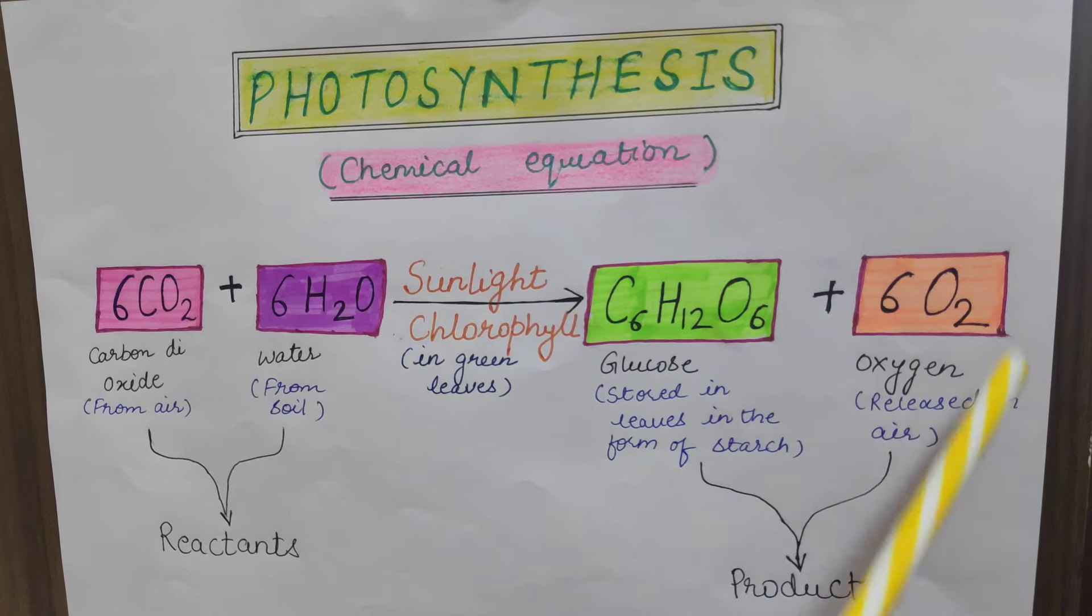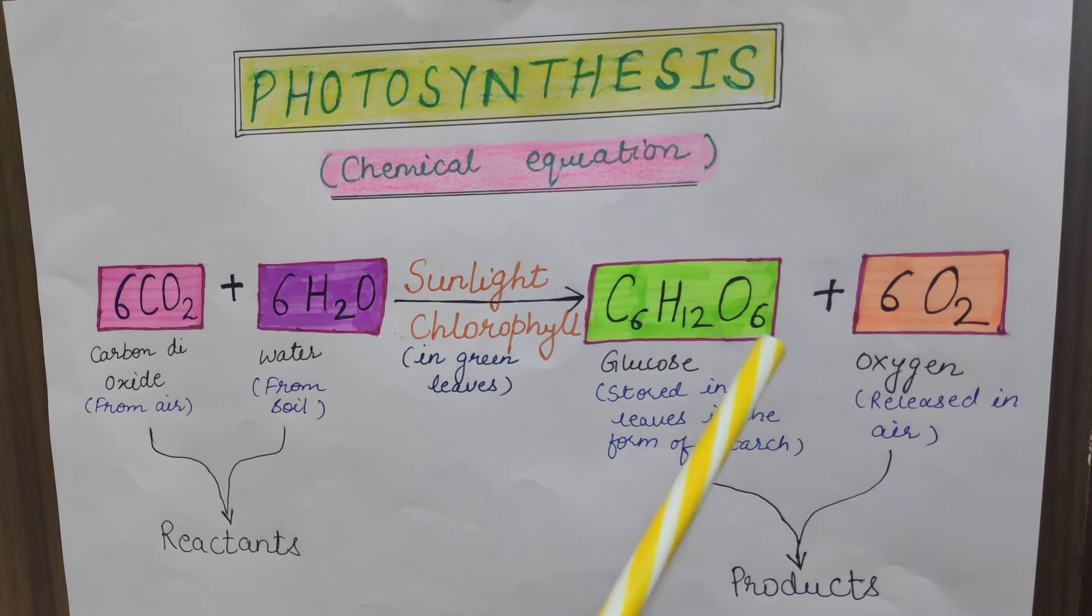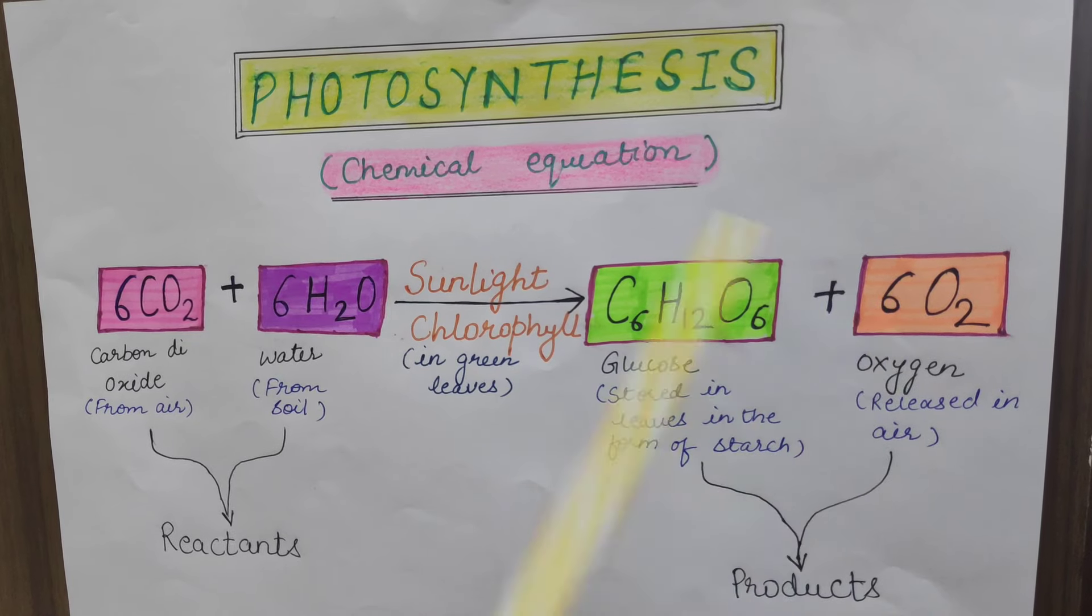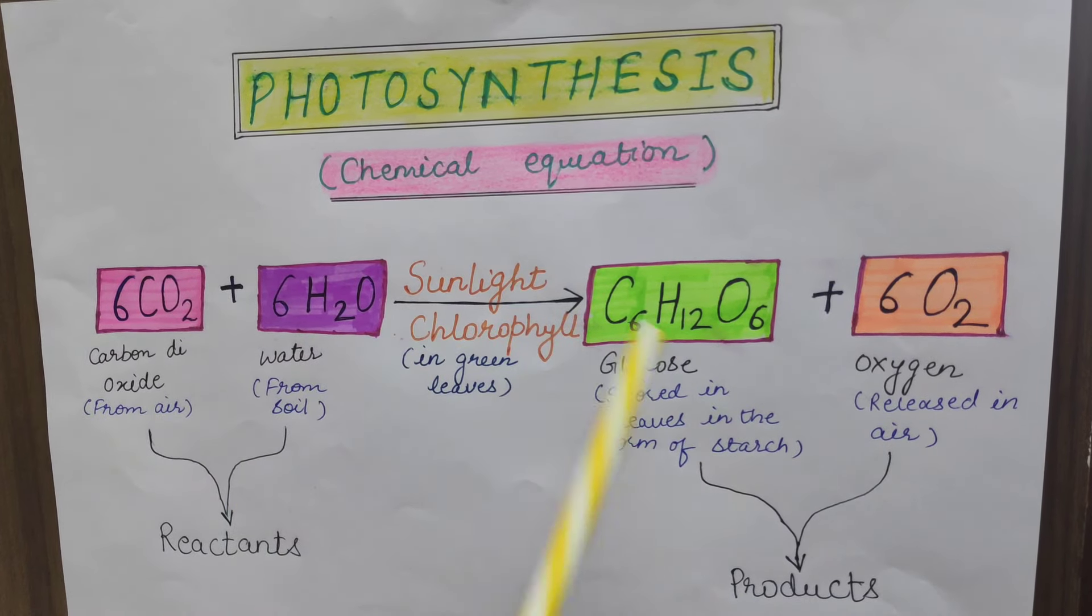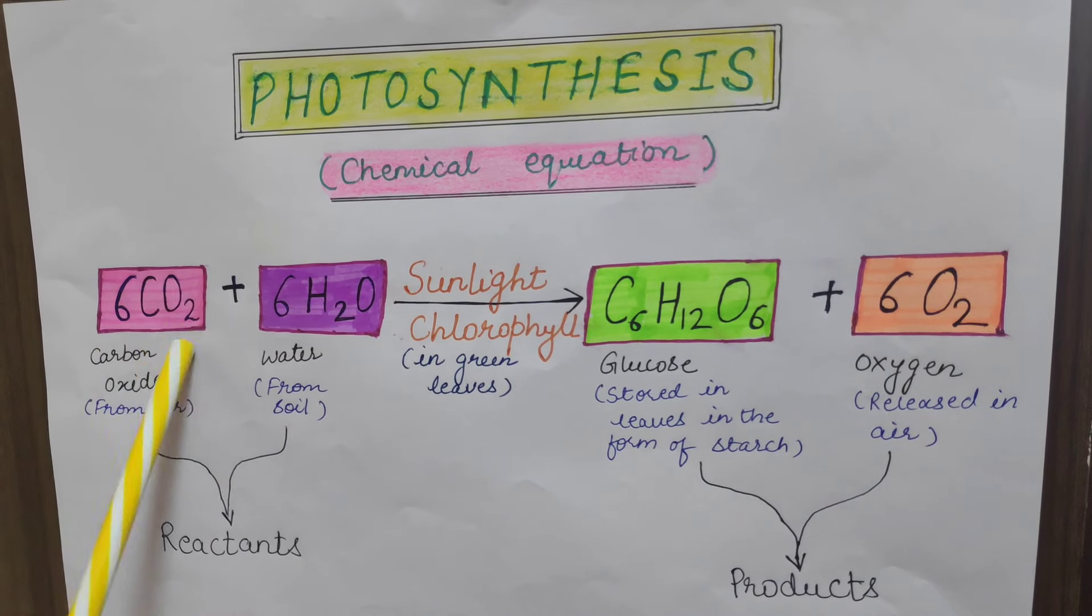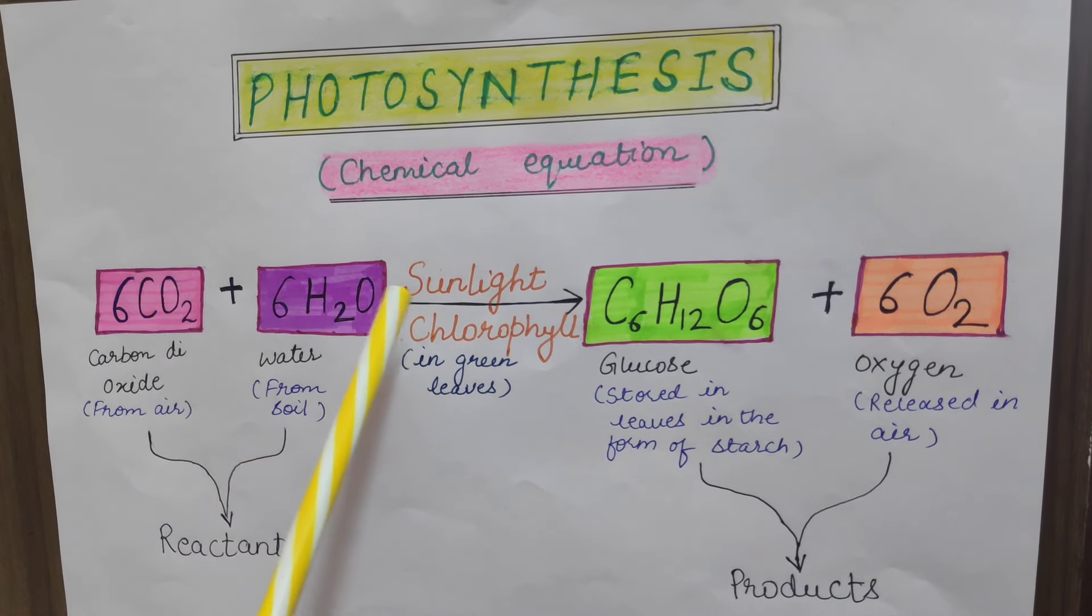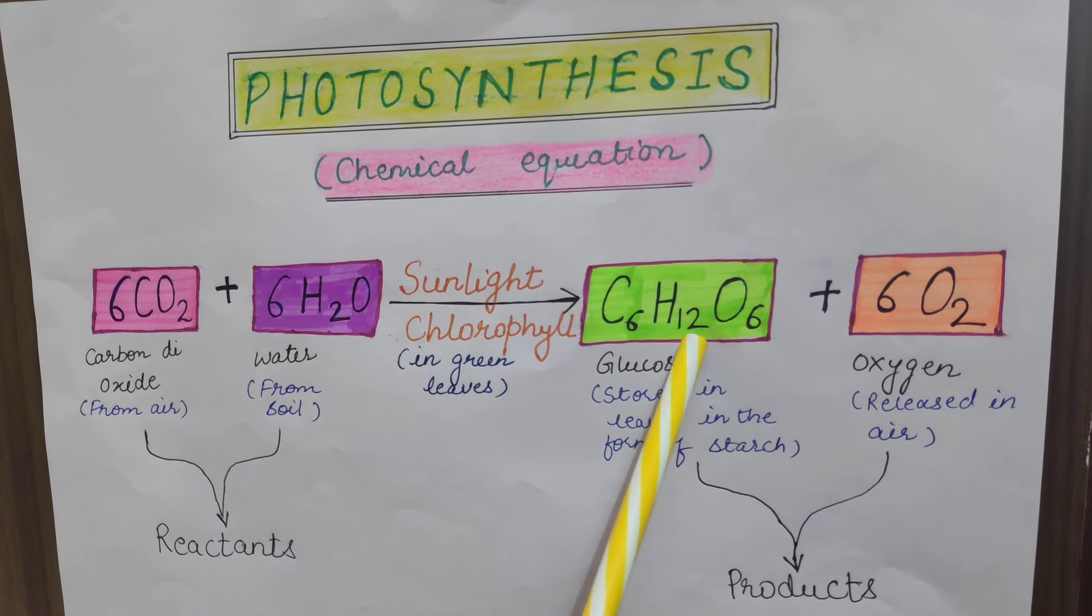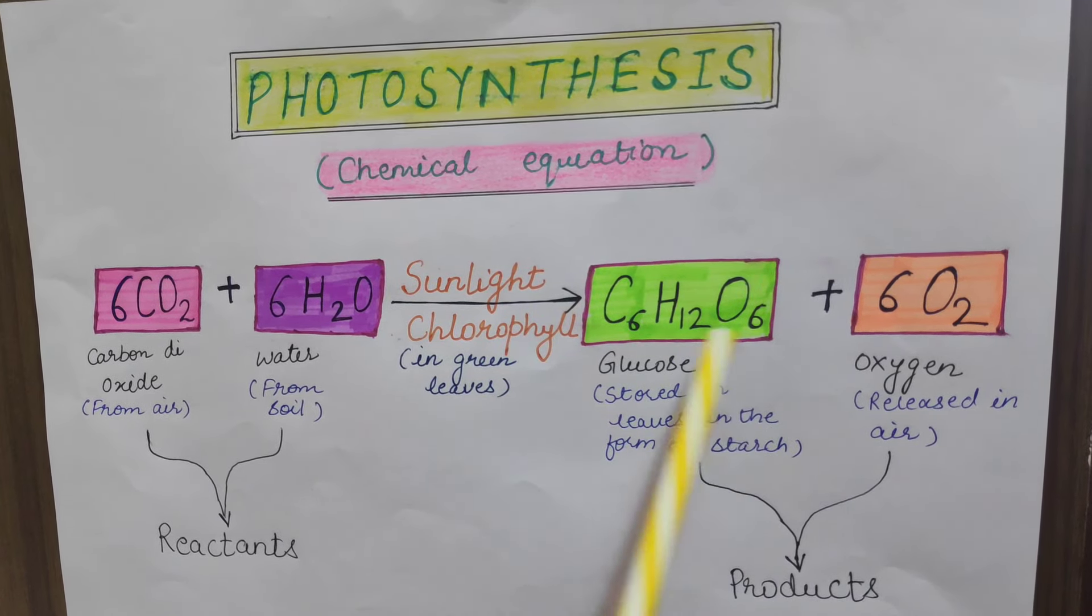The oxygen which is released, it is released in air and it is used by all other organisms. So this is the complete chemical equation of photosynthesis. 6 CO2, 6 H2O in presence of sunlight and chlorophyll. C6 H12O6, this is the formula of glucose. It gives 6 oxygen.